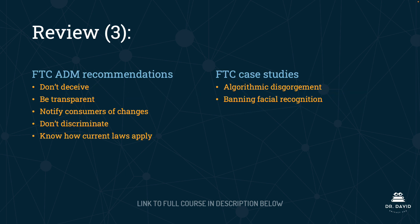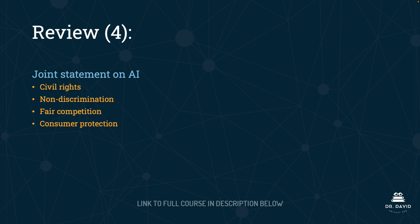The top-line FTC ADM recommendations to remember are: don't deceive, be transparent, notify consumers of changes, don't discriminate, and know how current laws apply to AI systems. Regarding FTC case studies, remember the term 'algorithmic disgorgement' — that seems very testable — and know that the FTC has banned facial recognition systems. Concerning the joint statement on AI, the main takeaway is that agencies have identified spaces where they can enforce existing authorities: civil rights, non-discrimination, fair competition, and consumer protection.